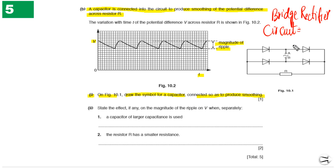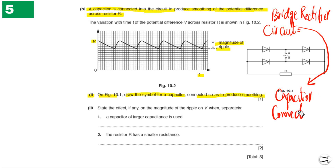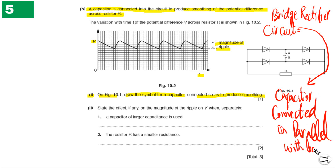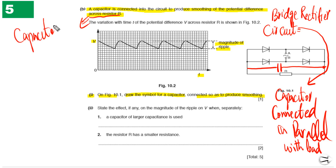The capacitor has to be connected in parallel with the load. Load in this case simply means the resistor. So we connect the capacitor in parallel with resistor R. This is the key concept: the capacitor must be in parallel with the load resistor to achieve smoothing.